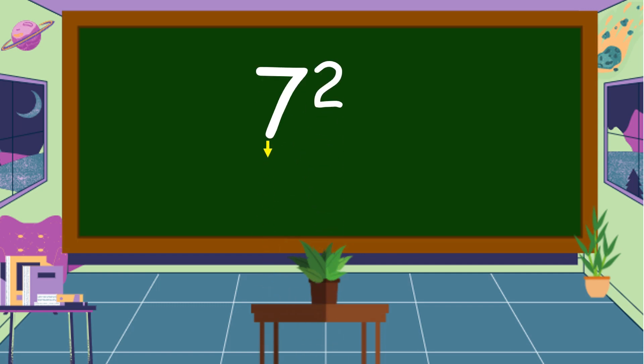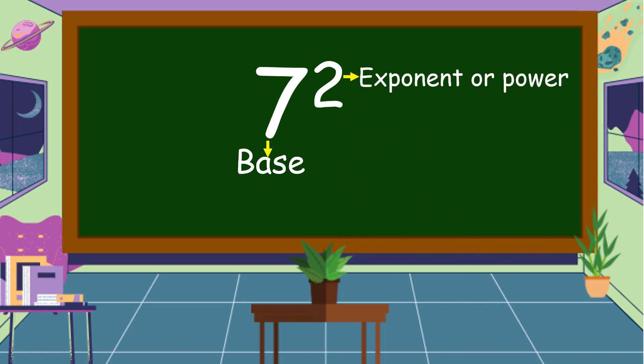7 here is the base. 2 is the exponent or power. As you can see, 7 is written in a bigger number while 2 is written in a smaller number on top next to 7.